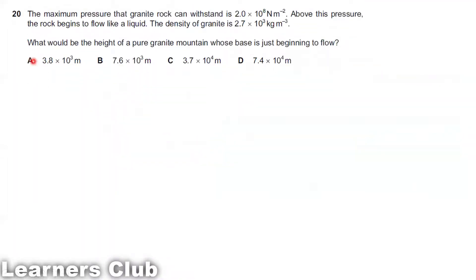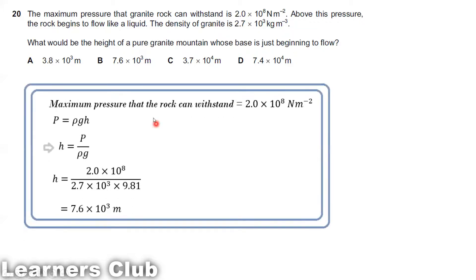Question 20. The maximum pressure that granite rock can withstand is 2.0 times 10 to the power 8 Newtons per meter squared. Above this pressure, the rock begins to flow like a liquid. The density of granite is 2.7 times 10 to the power 3 kg per meter cubed. What would be the height of a pure granite mountain whose base is just beginning to flow?